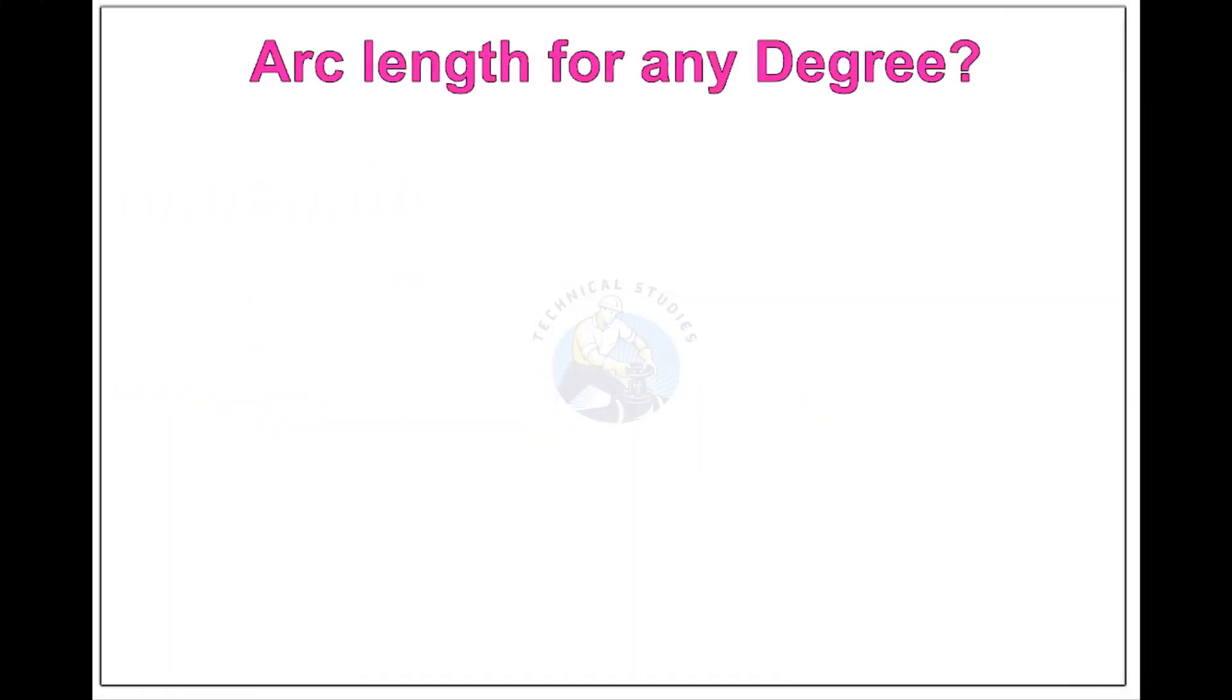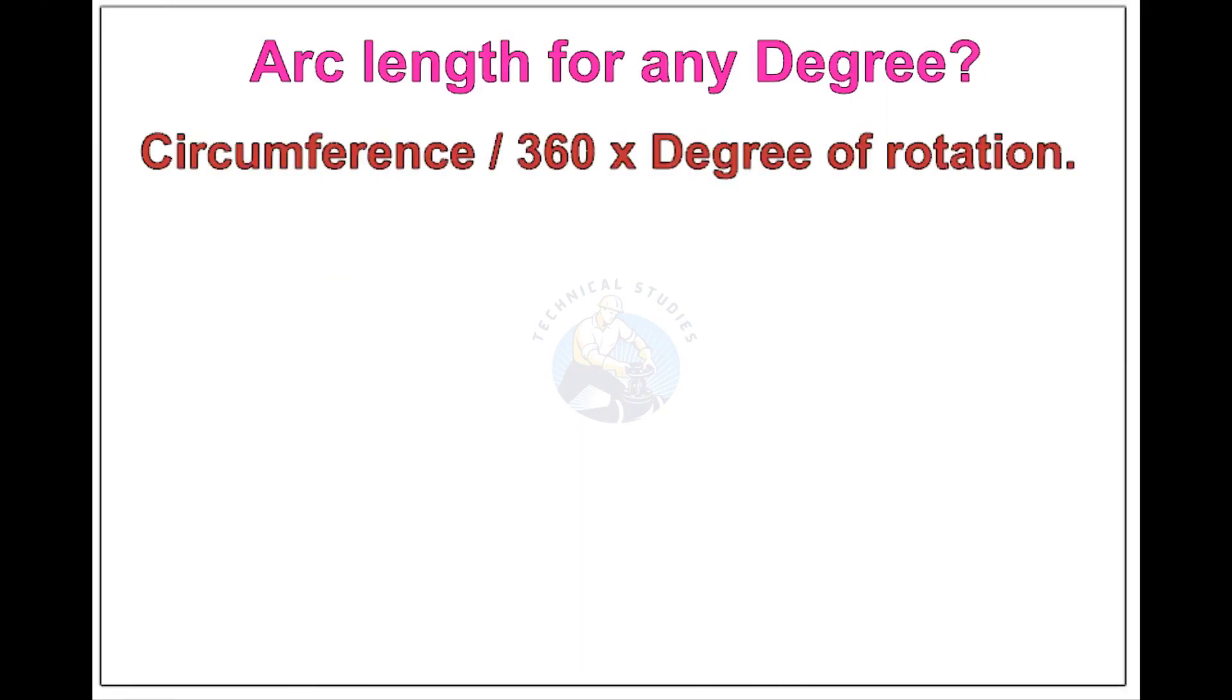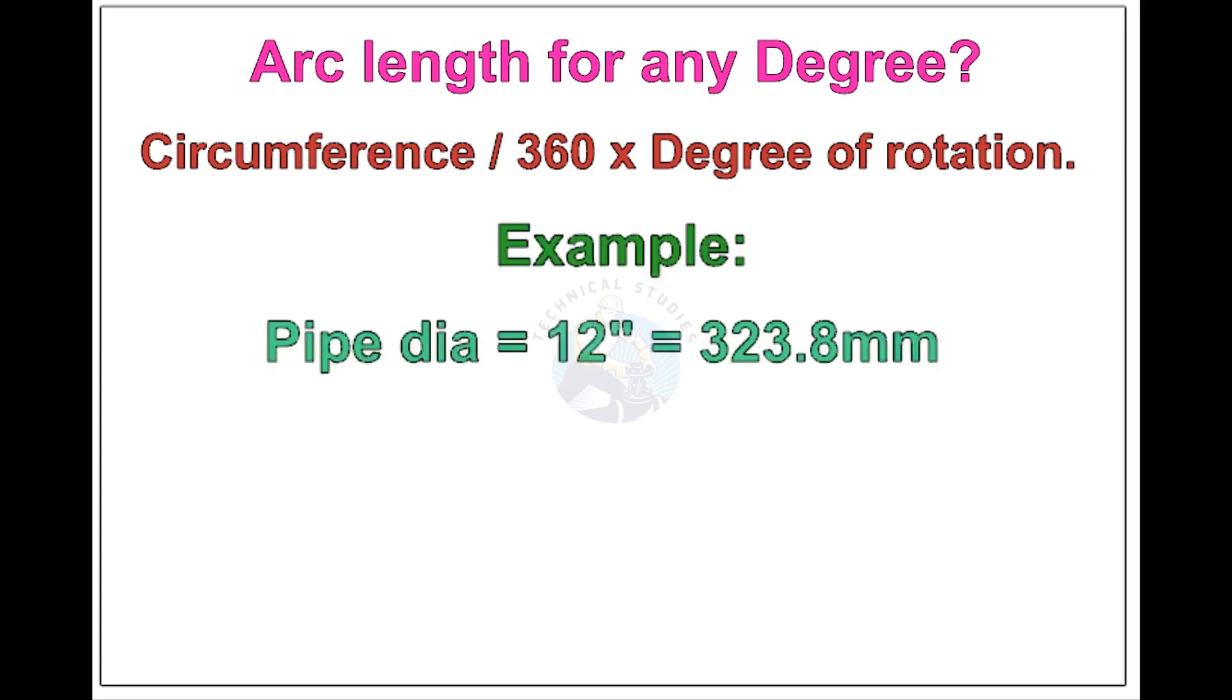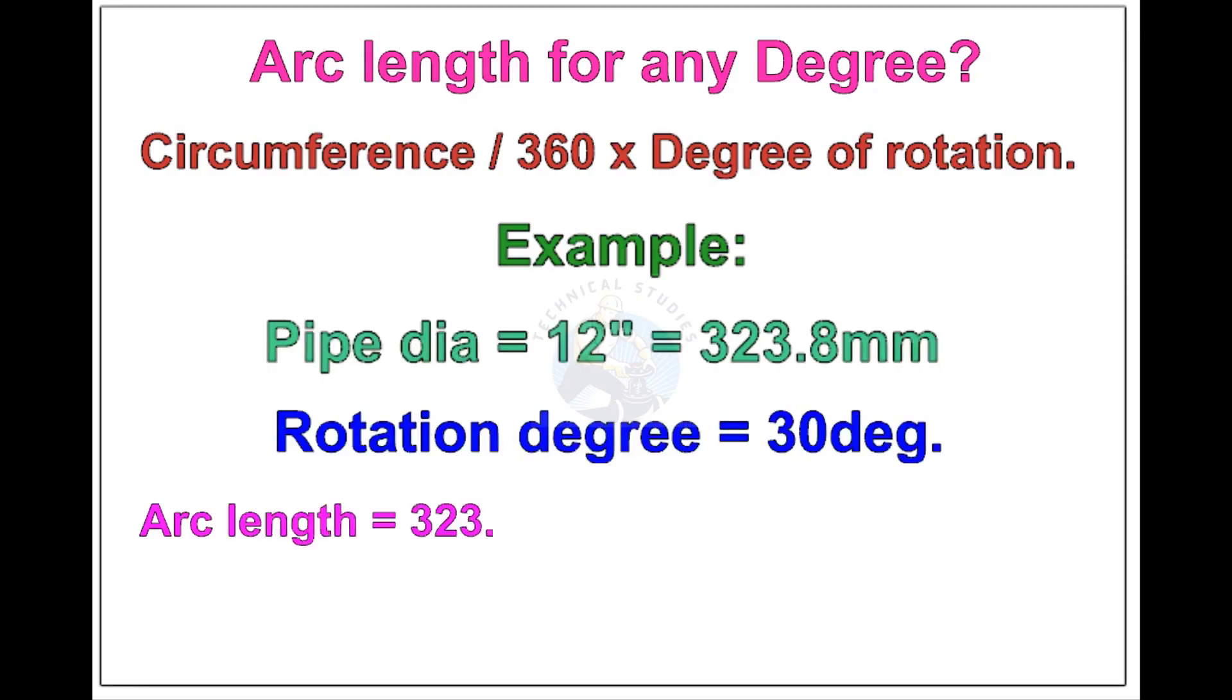Arc length of any degree. Circumference of the pipe divided by 360 into the degree of rotation. Let us check the arc length of 12 inch pipe rotated 30 degree. Apply the formula. The answer is 84.8 millimeters.